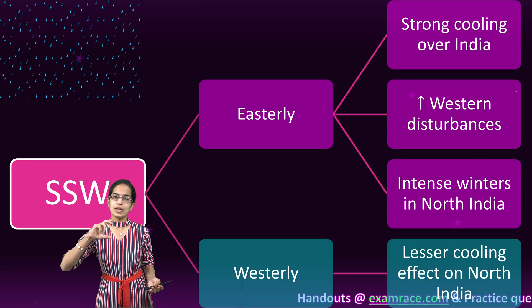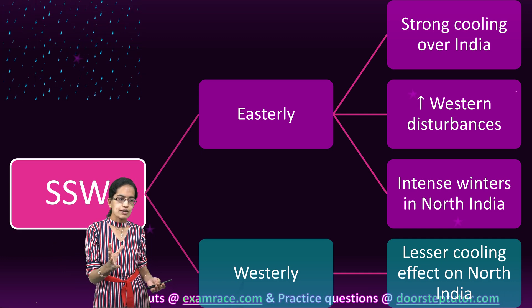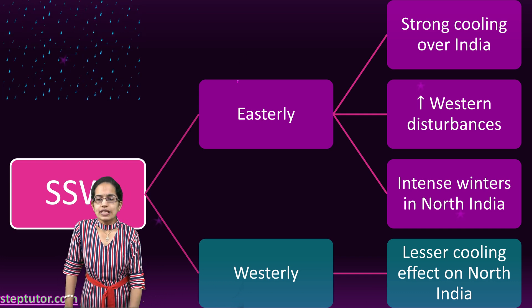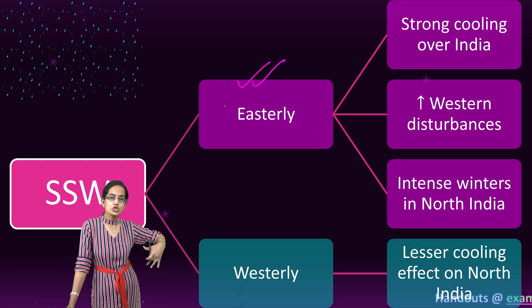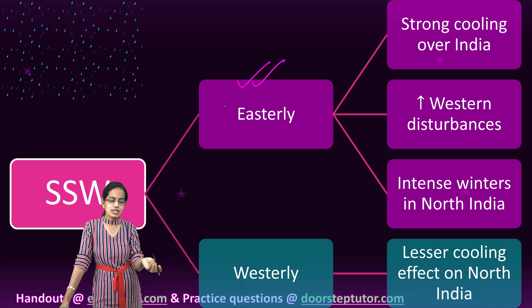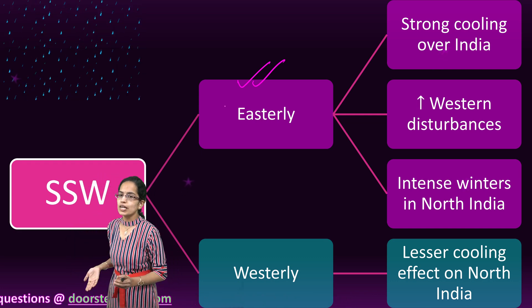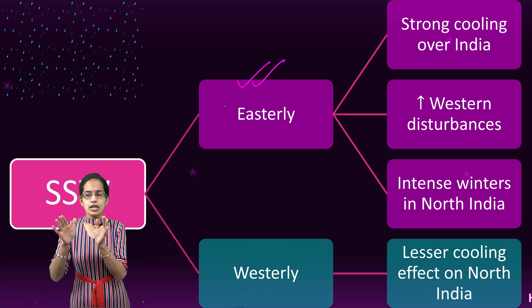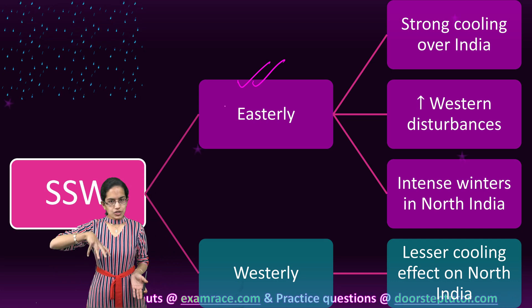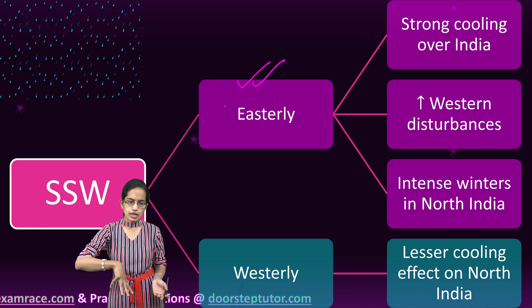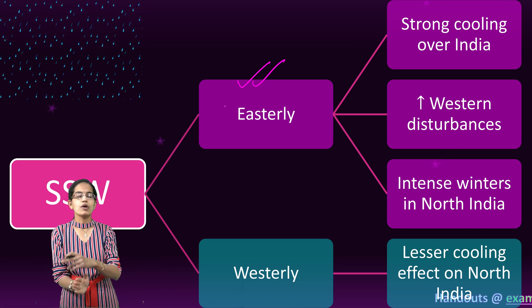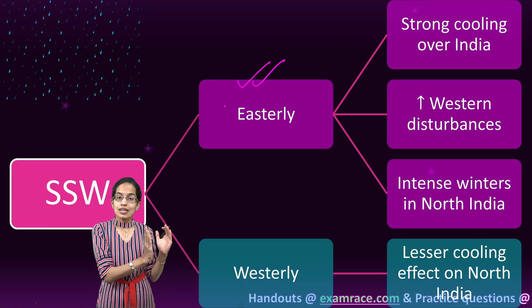Sudden stratospheric warming can be explained in two ways: either as an easterly wave or a westerly wave. Westerly is simply a reverse of easterly SSW. When there is an easterly SSW, it leads to a huge cooling effect on the Indian subcontinent — intense winters are seen and western disturbances are further enhanced. When there is a westerly SSW, it leads to less cooling effect on the Indian subcontinent. The recent January 2021 episode is very important: just five to six days prior to the peaking of the SSW, a spike in rainfall patterns was observed in South India.